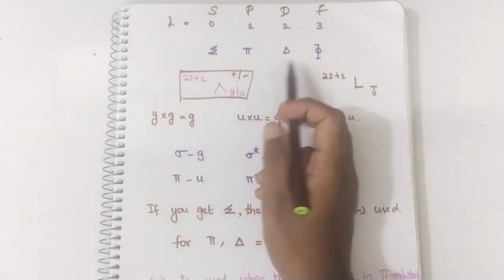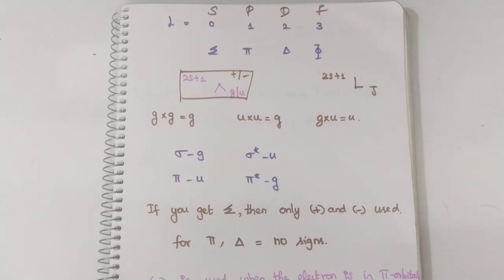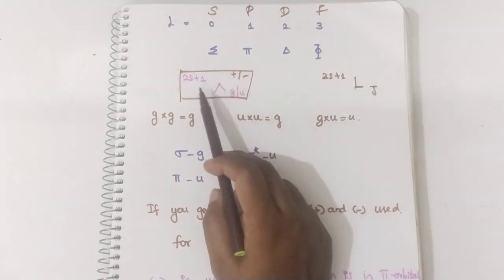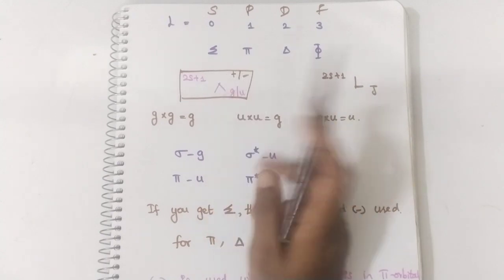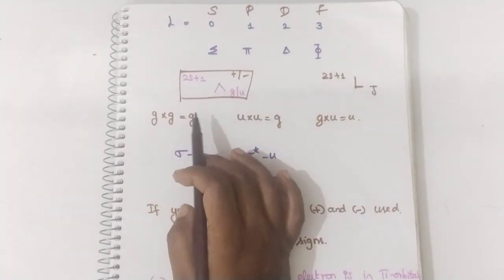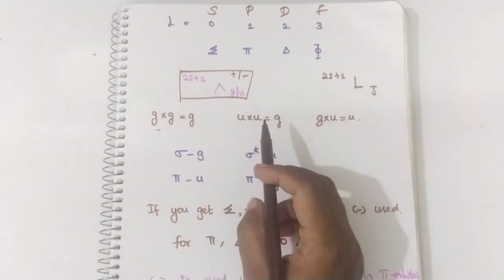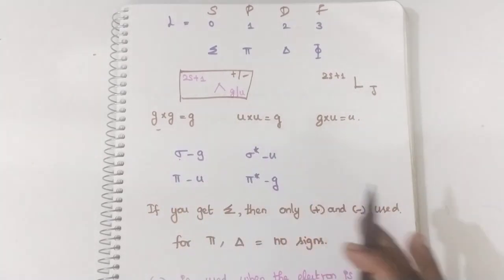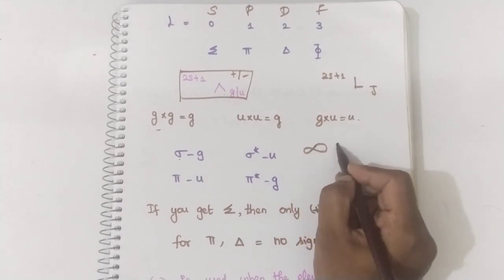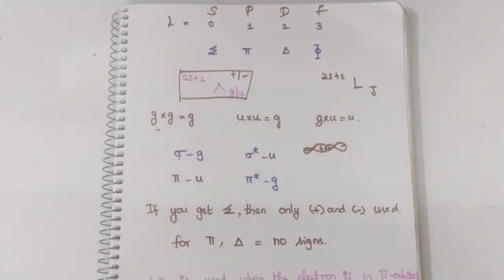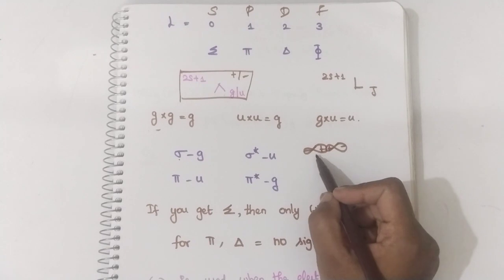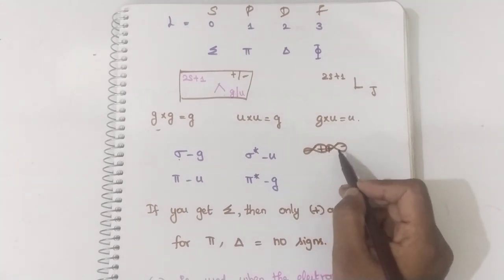In diatomic molecules, the molecular term symbol is represented as: 2S+1, then the Greek letter (sigma/pi/delta), then G or U for gerade or ungerade, then plus or minus. You should understand that if sigma is gerade — these are basics. First of all, what is sigma? It is nothing but headwise overlap. When headwise overlap occurs, a sigma bond will be formed. If it is plus-plus, sigma bond will be formed.